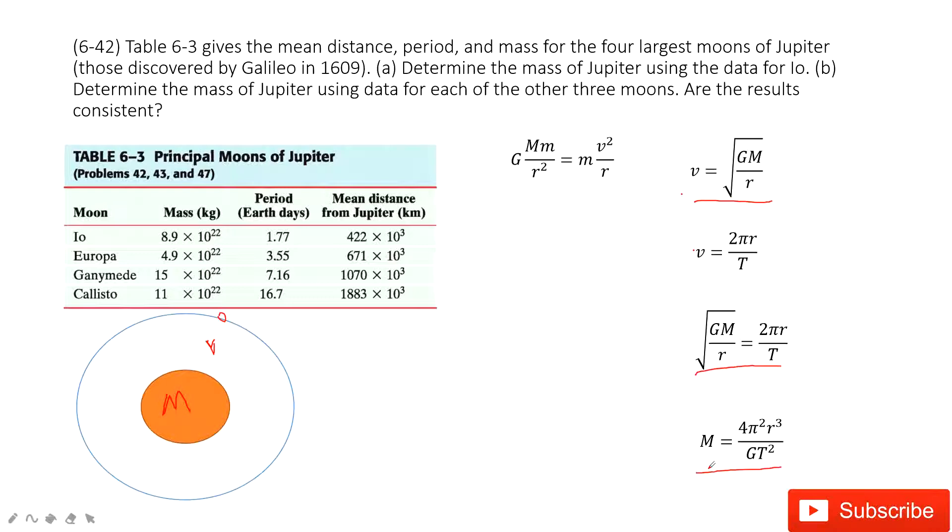And then we look at this function. This mass is the mass of Jupiter. And then 4π², this is the constant. r³, this r is the distance from Jupiter to the moon. And then G is the constant. T is also given in this chart.